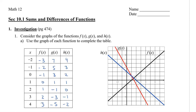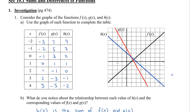I have filled in the table with the corresponding y values from the graph. For example, when x is negative 2, we have f of negative 2 equal to negative 3. F of negative 1 is negative 2, f of 0 is negative 1, and so on. What do you notice about the relationship between each value of h of x — the blue graph — and the corresponding values of f of x and g of x? Hopefully you saw that you can get the numbers for h of x by adding f of x and g of x together.